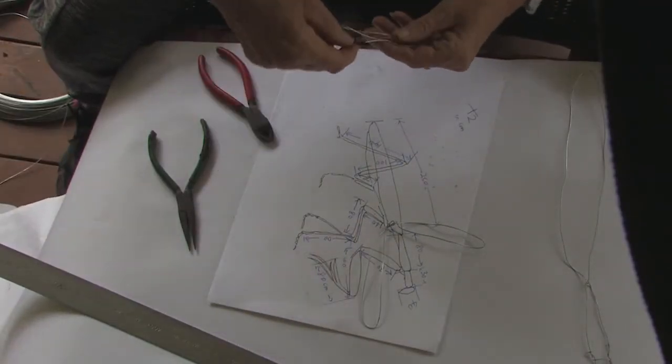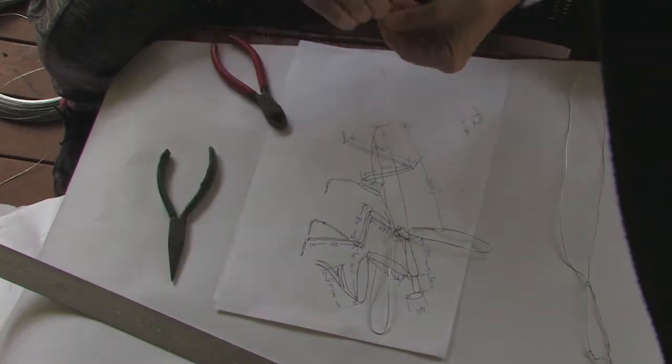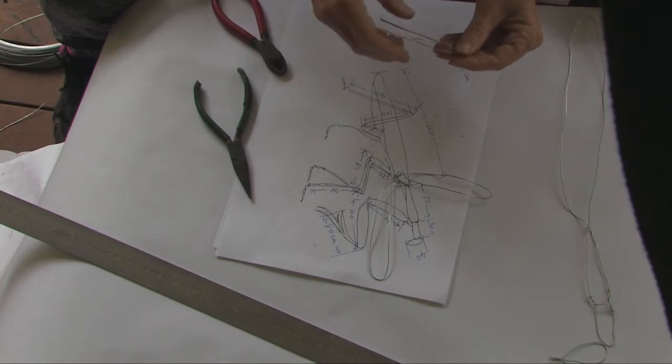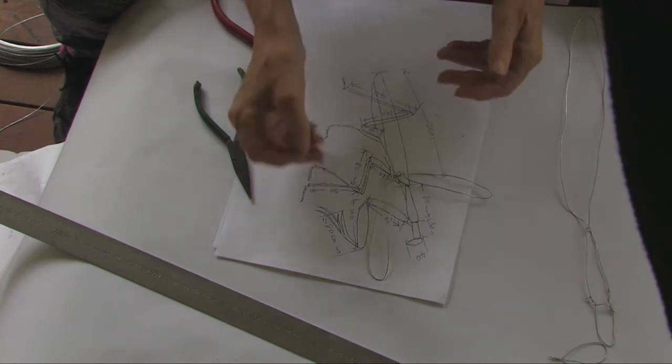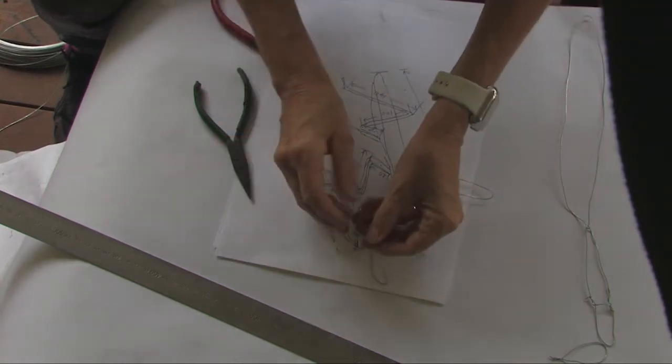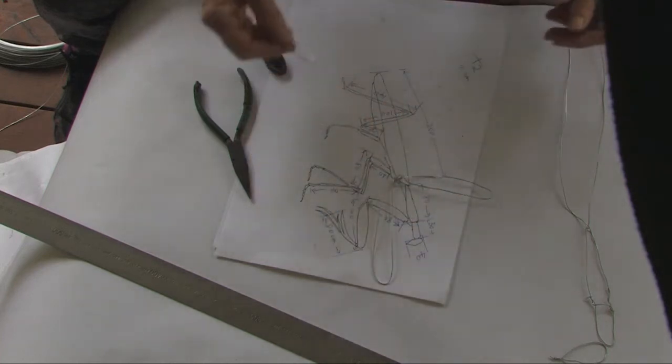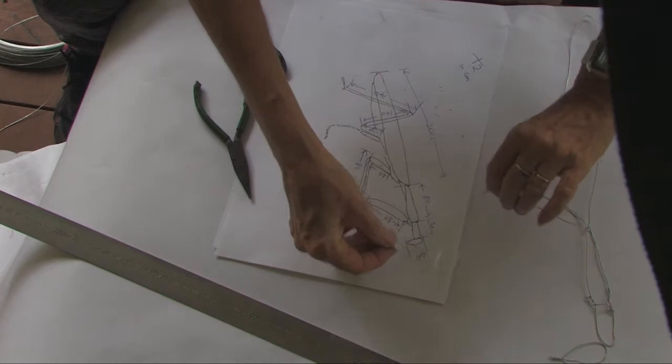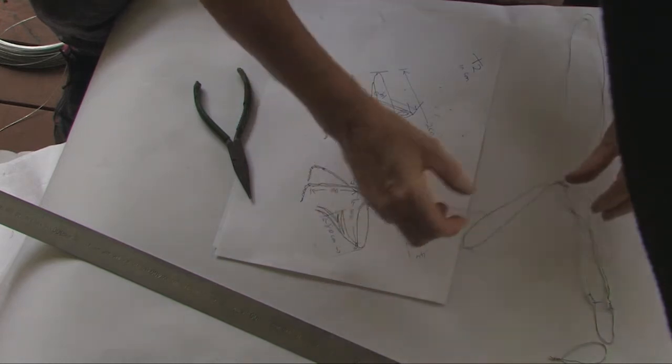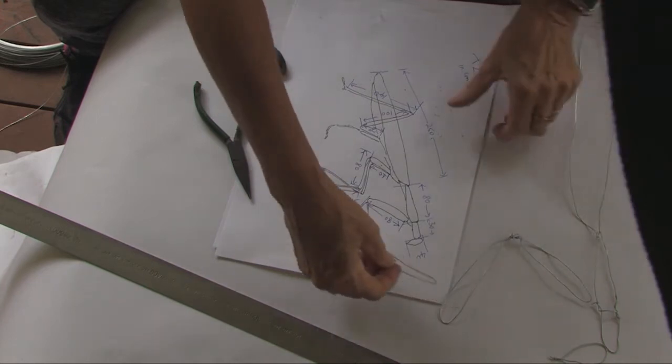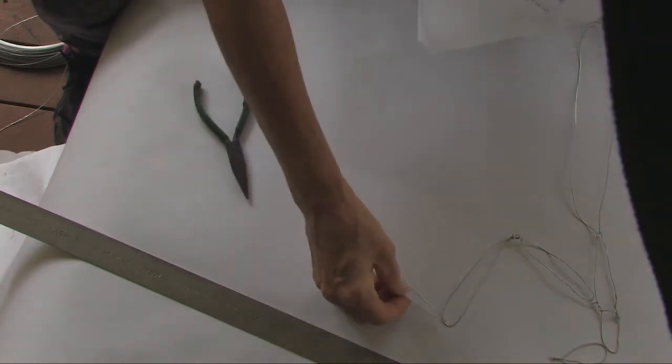To section here. We've got this little section here. Now we've got the leg that will be coming off that section. That part that's going to come off there.